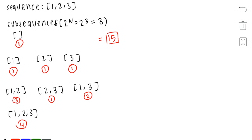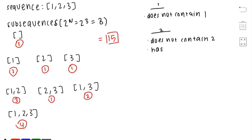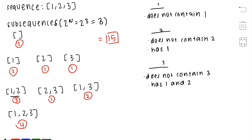First, let's consider how we know when the MEX is 1 in a subsequence. Looking at all our subsequences with MEX 1, we can see they all do not contain a 1. Moving on to MEX 2: all the subsequences with MEX 2 do not have the number 2, but they all do have the number 1. Similarly, a subsequence with MEX 3 does not contain the value 3, but it does contain the numbers 1 and 2. We can summarize: a subsequence with MEX n does not contain n, but contains all positive numbers less than n.